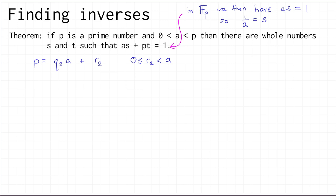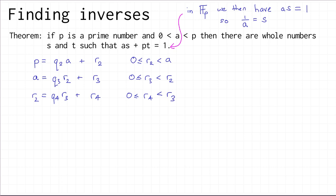We then continue and divide a by r2, getting a new quotient and a new remainder r3, where r3 is strictly less than r2. Then we divide r2 by r3, getting another new quotient and remainder r4, where r4 is less than r3 because we divided r2 by r3.